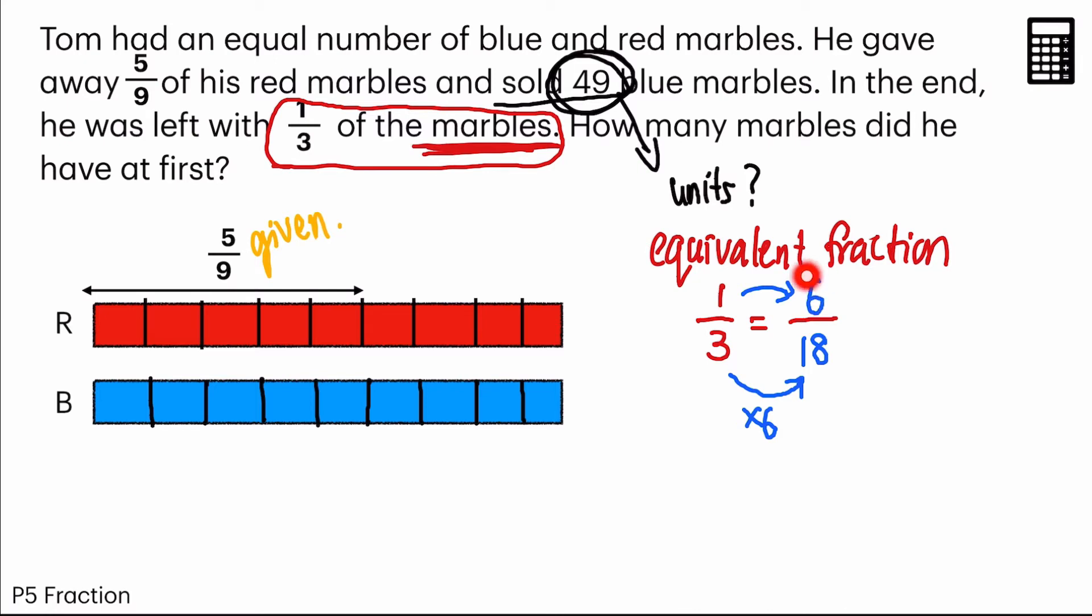Now, this 6 out of 18 refers to the remaining parts. So here we have 1, 2, 3, 4, 5, 6 parts. So these 6 parts are the remaining, which is one third of the marbles. We use equivalent fractions to find out the parts.